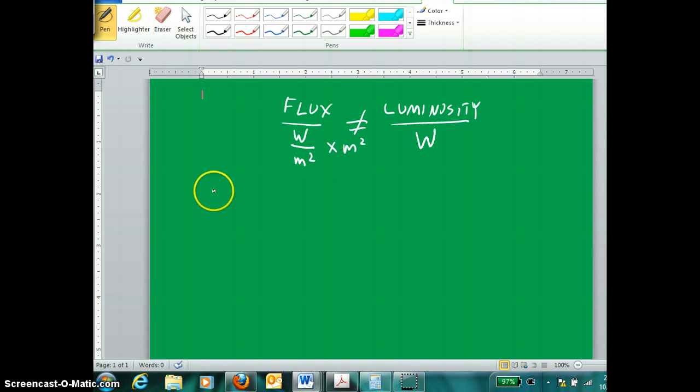So, flux is calculated according to Stefan's law by using its constant 5.67 times 10 to the negative 8 watts per meter squared per Kelvin to the fourth. And by multiplying that by the temperature in Kelvins, you can calculate the flux.